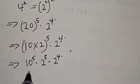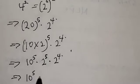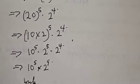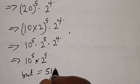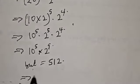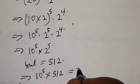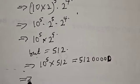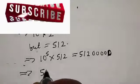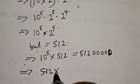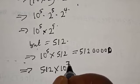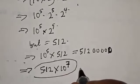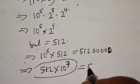We have 2 raised to power 5 and 2 raised to power 4, which can be combined to give 10 raised to power 5 multiplied by 2 raised to power 9. Now 2 raised to power 9 equals 512, so this implies we have 10 to the power 5 multiplied by 512, which equals 5.12 times 10 raised to power 7. That is our final answer: 5 raised to power 5 multiplied by 4 raised to power 7 equals 5.12 × 10⁷.